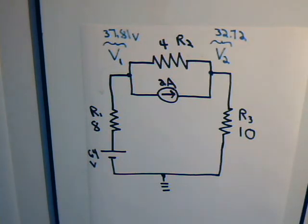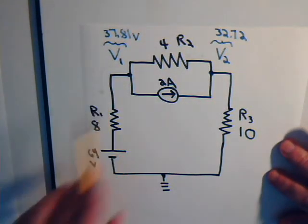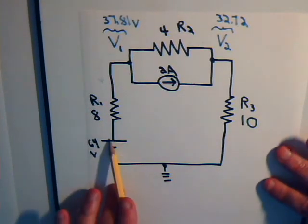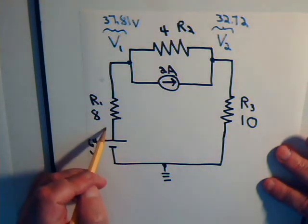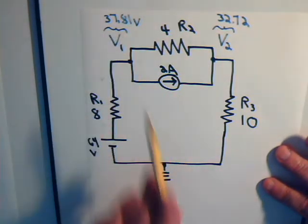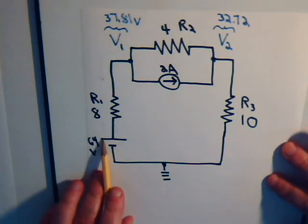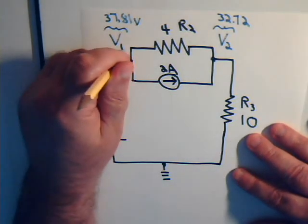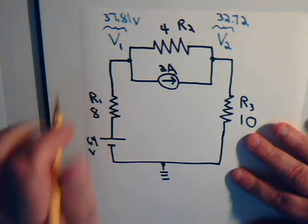But now that we have determined what these voltages are, we can see that's the wrong direction. This is at a positive potential of 64 volts pushing the current in this direction, and this is at a positive potential of 37.81 volts, so this one is going to win the tug of war.